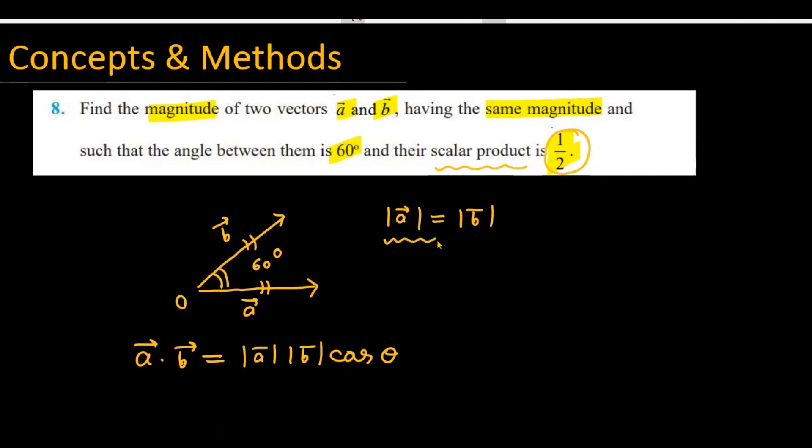Given that |A| = |B|, I can write this as |A| × |A| × cos 60°. The angle θ is 60°, and the scalar product equals 1/2.